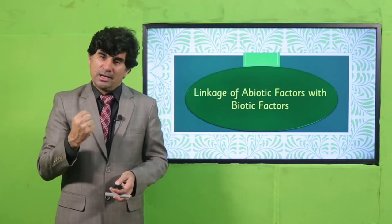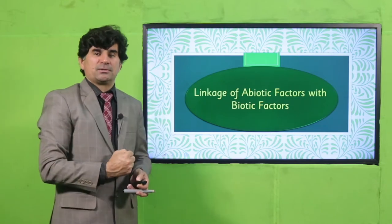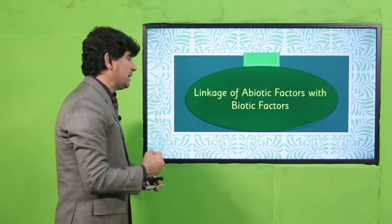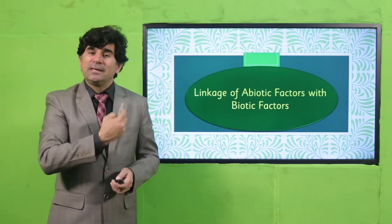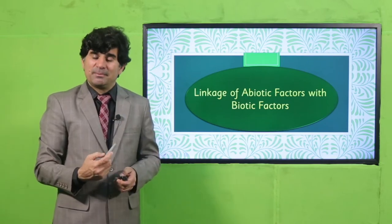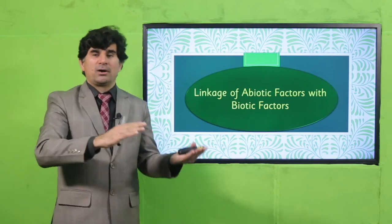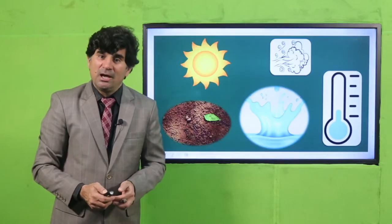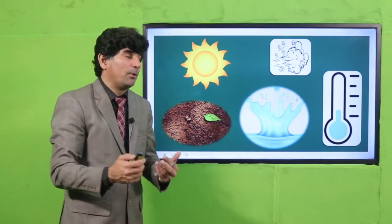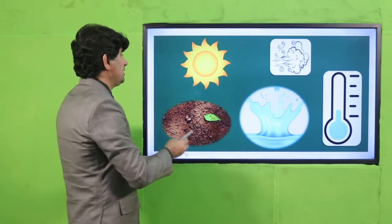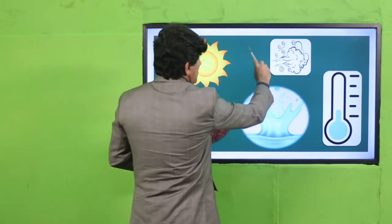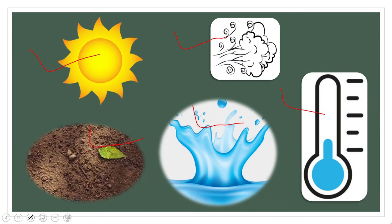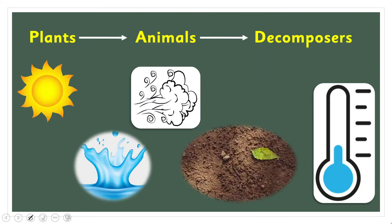Now you saw the importance of five different components of the abiotic ecosystem. Now we will see what the link between biotic and abiotic components is — what their relationship is and what their importance is. You see: sunlight, air, temperature, water, and soil — never forget — these are the abiotic components.